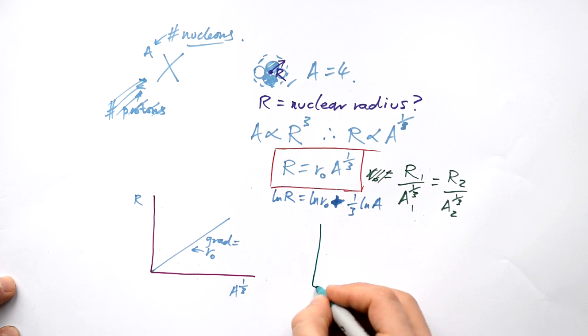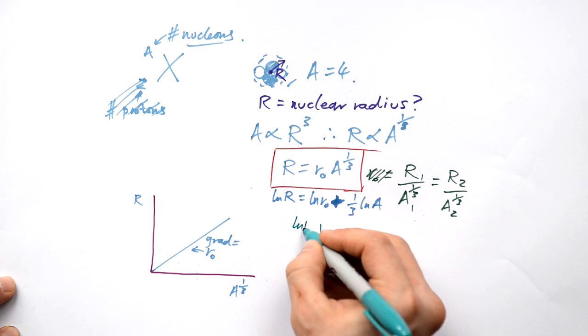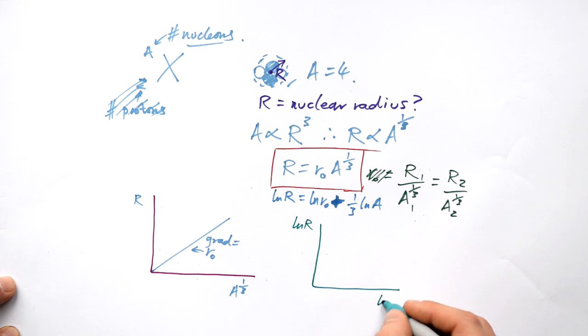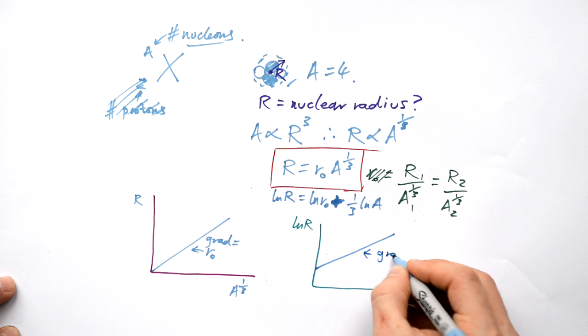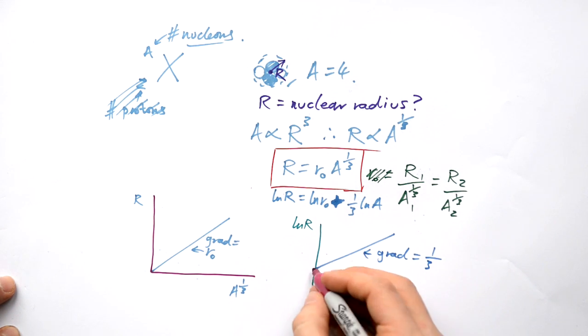So if we draw a graph of this now, we can have log of r on the y-axis, log of A on the x-axis and again we are going to get a straight line but it's not going to go through zero. The gradient of this is going to be equals to just 1/3 and the y-intercept here is going to be the log of r₀.